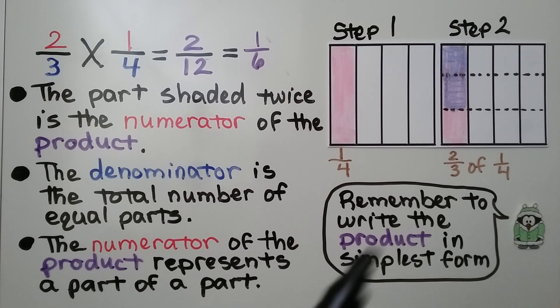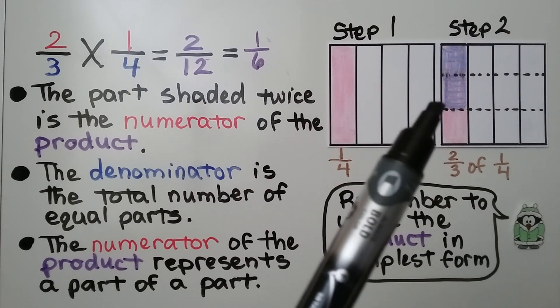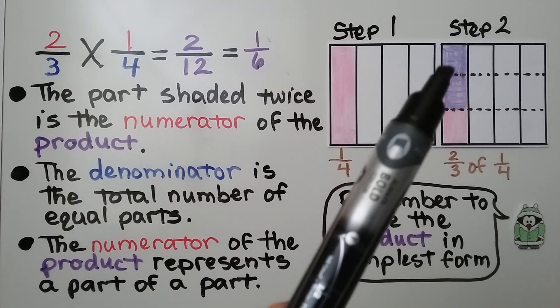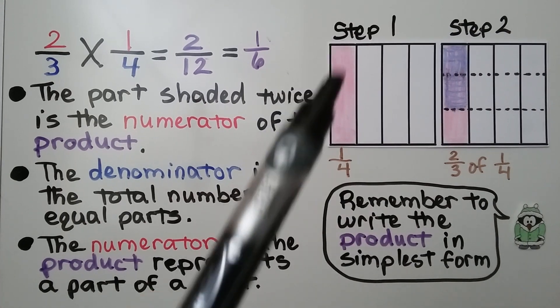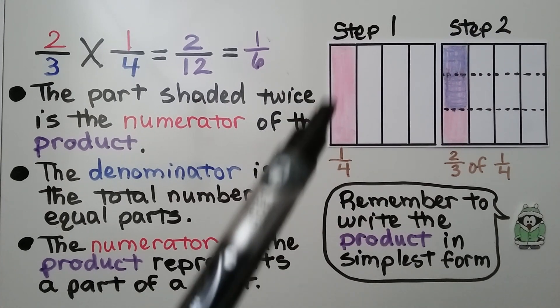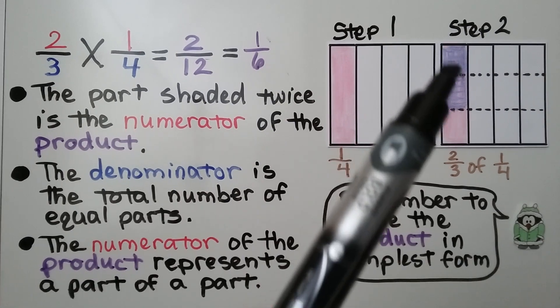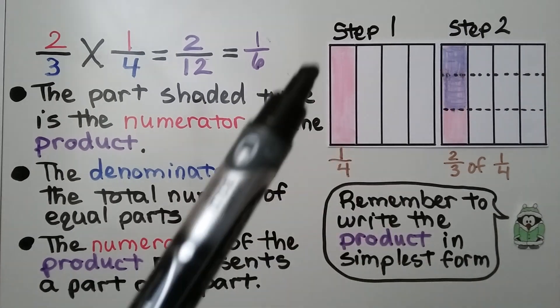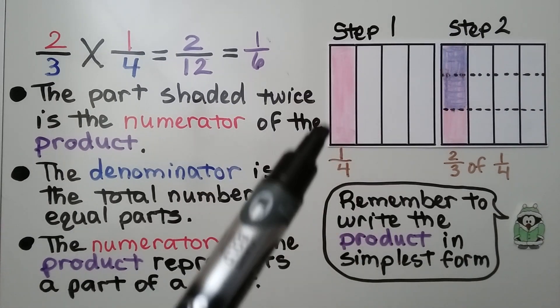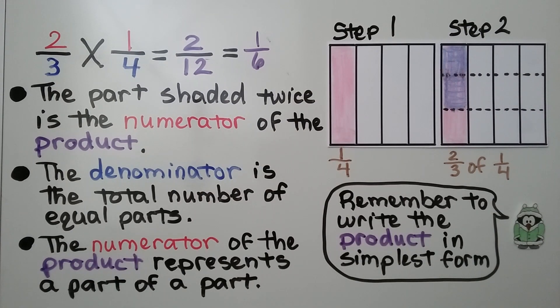This two that we shaded twice is just a part of the whole one-fourth — it's two-thirds of this one-fourth. Remember to write the product in simplest form.